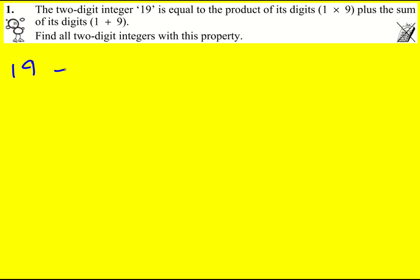We're told that 19 is equal to the product of its digits plus the sum of its digits. I'm asked to find all the two-digit integers with this property. So let's look for them.